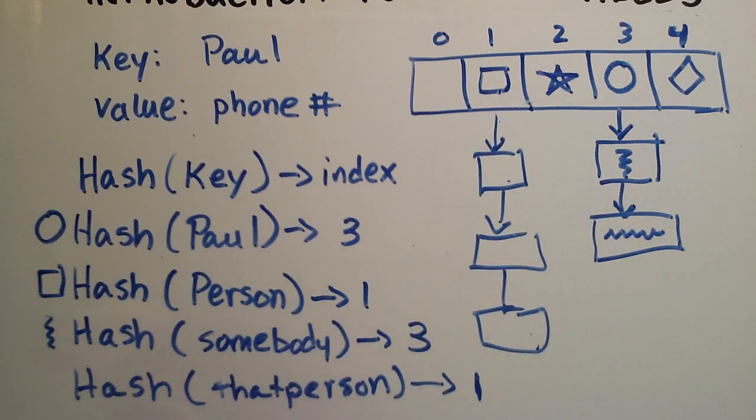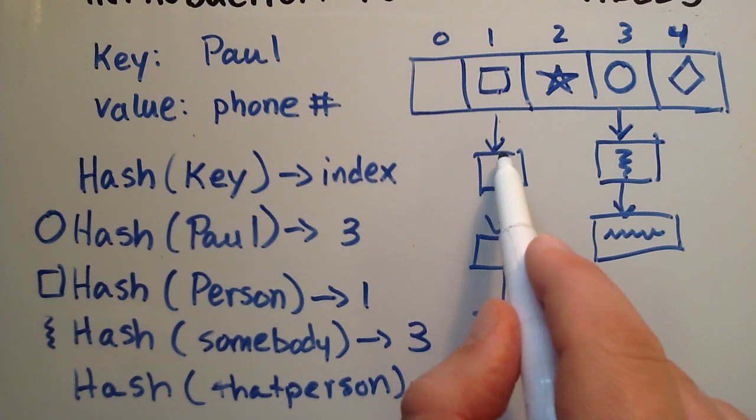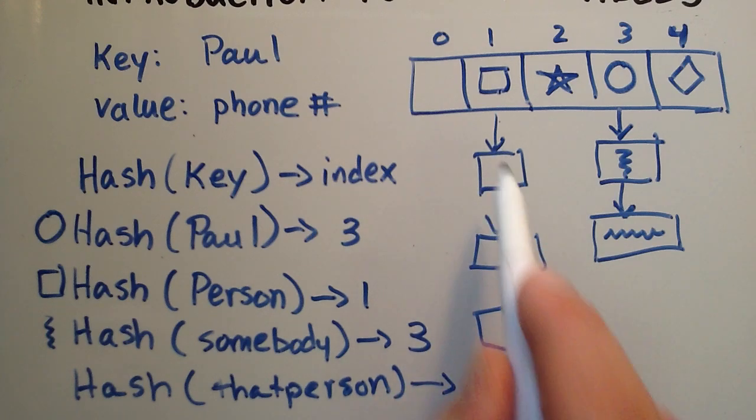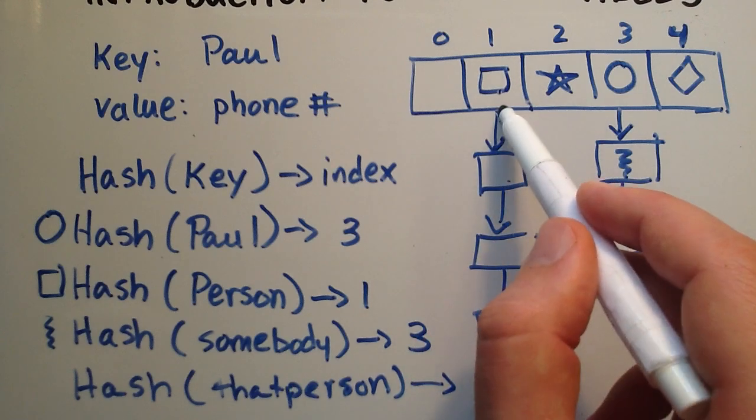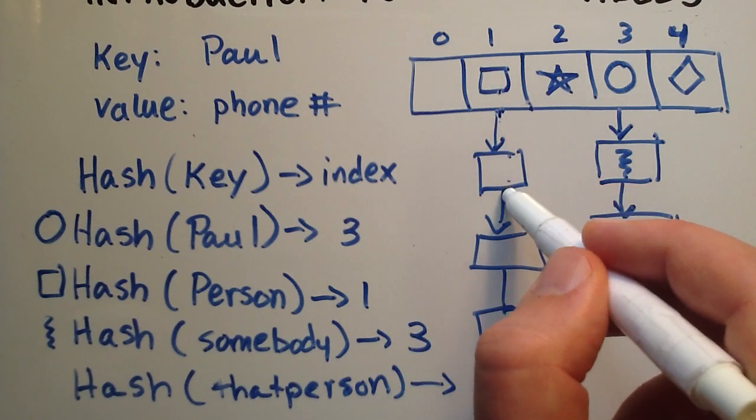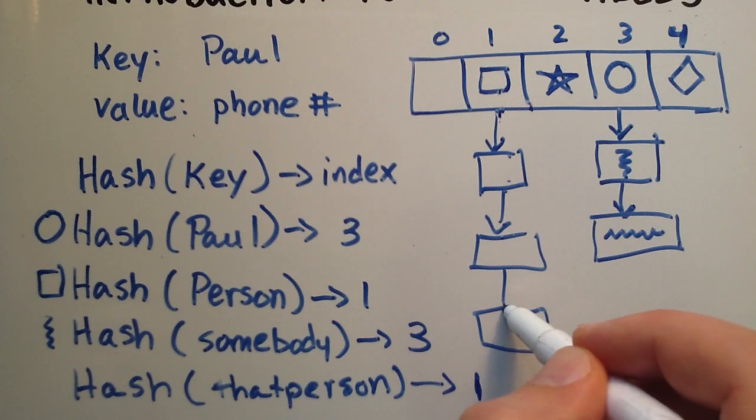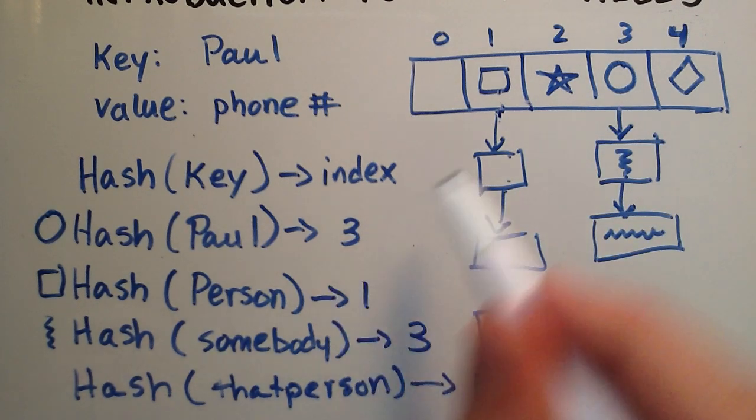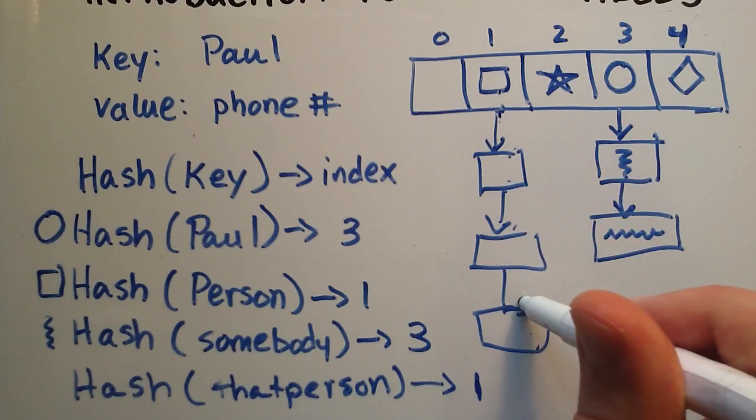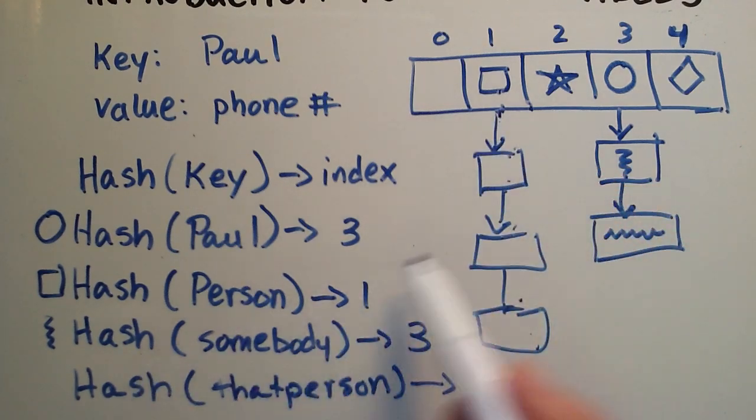And if you do this right, you shouldn't have very many links basically off of one single index. But if you have a collision, then we're going to implement this ability to basically add a linked list to each array index to take care of any collisions. And this is called chaining. Like I said, there's other ways to take care of collisions, but this is the way I'm going to implement taking care of collisions in the code that I write.